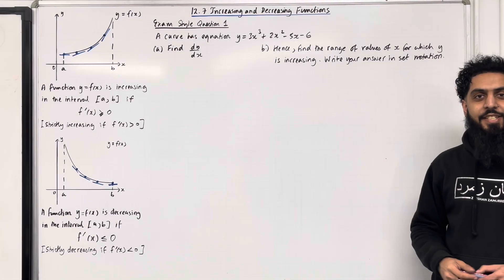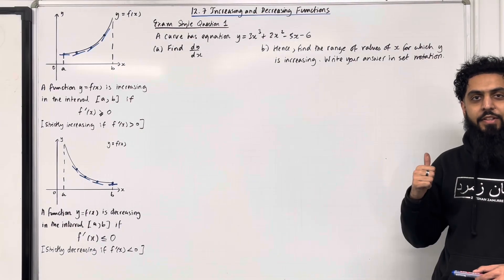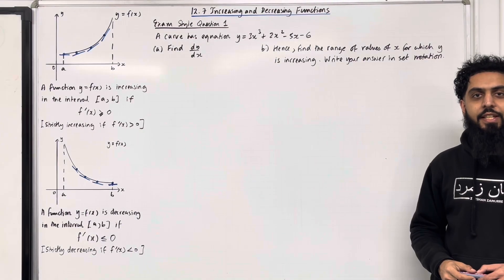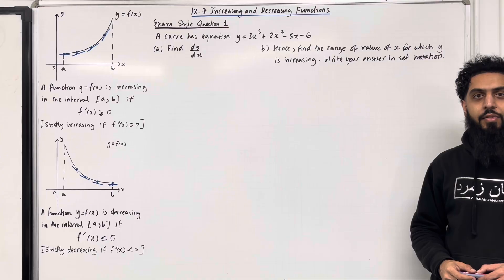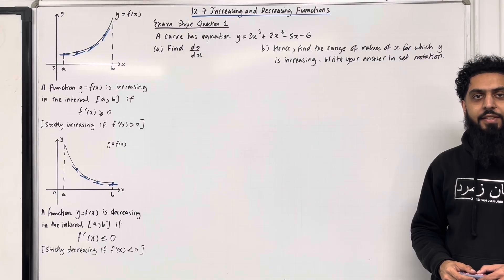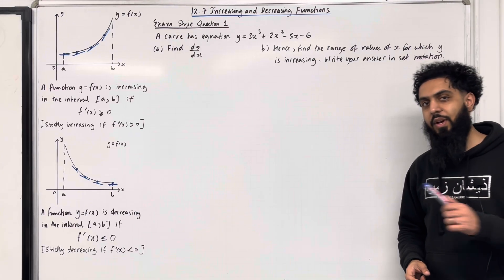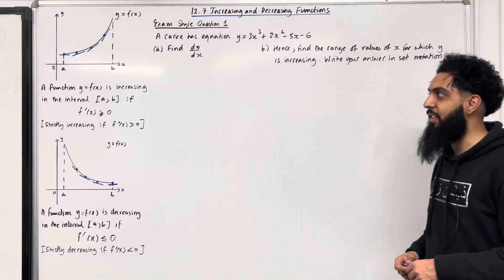Welcome back. In this YouTube video I'll be looking at 12.7, increasing and decreasing functions. 12.7 represents chapter 12, section 7 of the Pearson A-level Maths Year 1 textbook. Let's have a look at the key facts of this section.